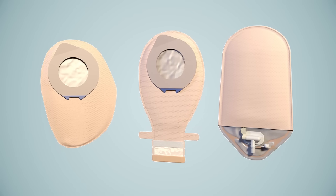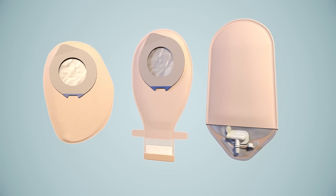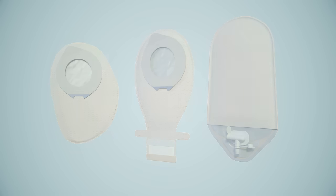A two-piece system can be used for all types of stomas. The flange sizes all vary and the bags are all available in closed, drainable, and urostomy.